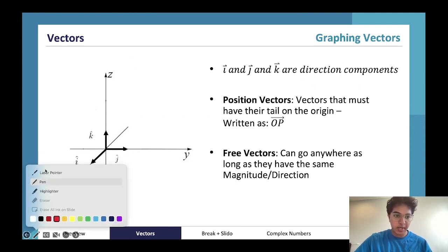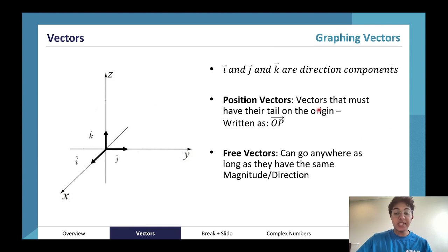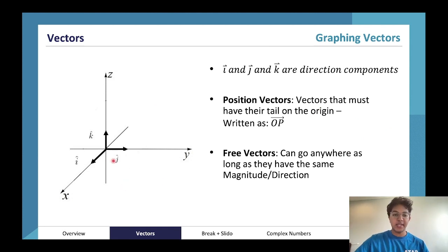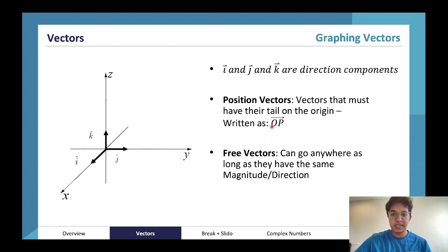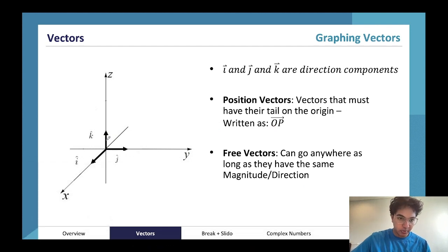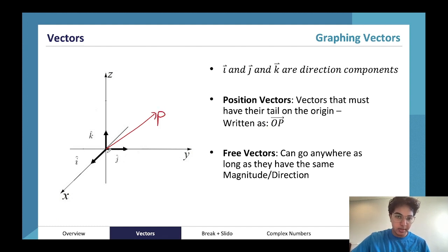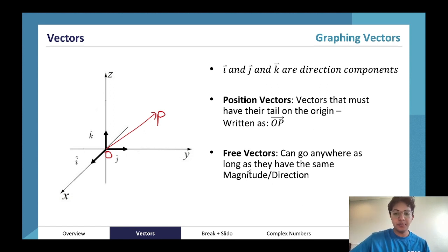Position vectors are a special type of vector. They start with their tail on the origin and their head somewhere else. The origin is always represented as O, so if we create a vector from O to P, this is called the position vector OP.